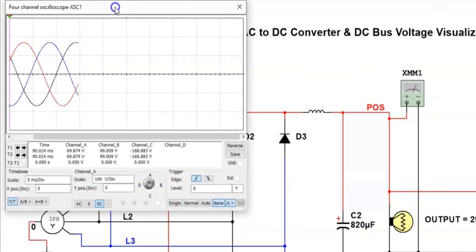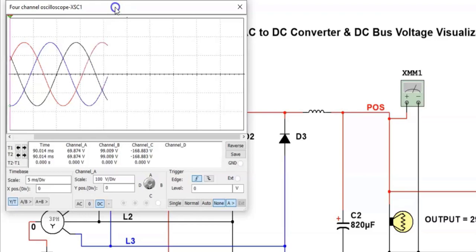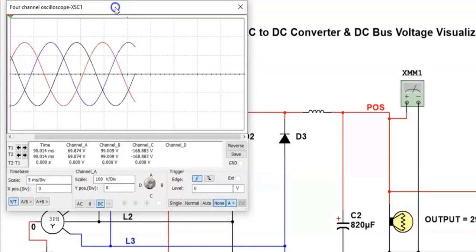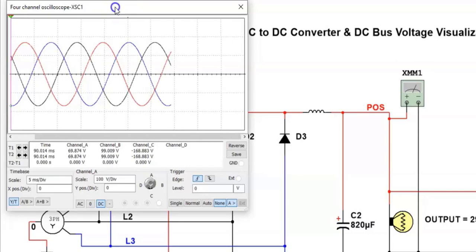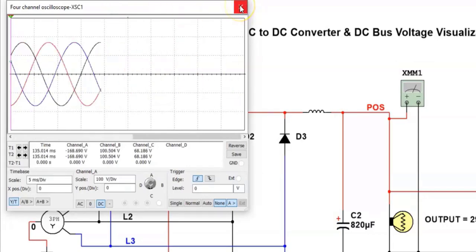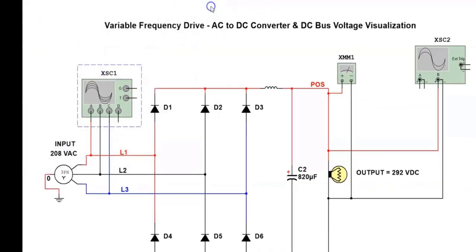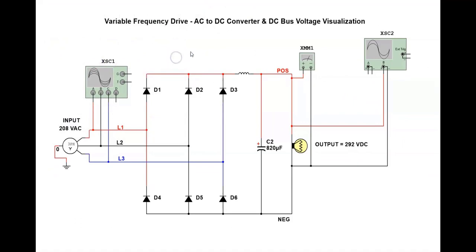If I freeze those waveforms at any given time, you'll notice that the black one is positive, it's above the zero plane, and the blue and the red are negative. Now I have the red one positive and the blue and black negative. There's always one positive, two negative or two negative, one positive. Please keep that in mind when I explain how the diodes rectify the current.